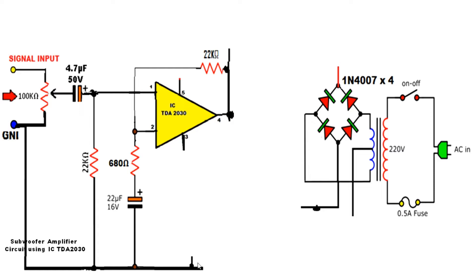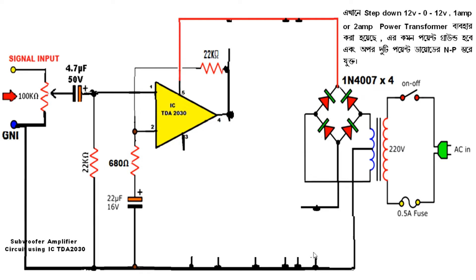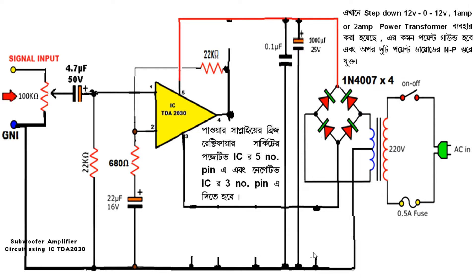We have a step-down transformer. The primary is 220 volts, the secondary is 2-0-2 AC voltage output. We have a diode bridge circuit, which is NPS and adds diodes in response to positive supply. The common middle point is 0 ground. The 3 number pin is the negative supply in the bridge circuit. This supply is filtered in DC using a condenser for filtering.